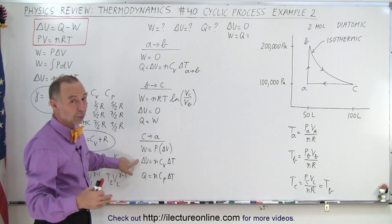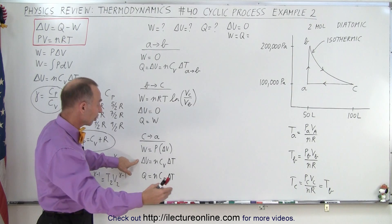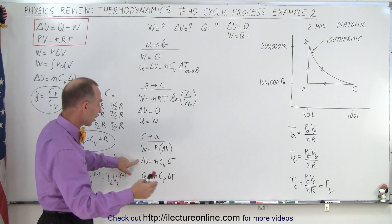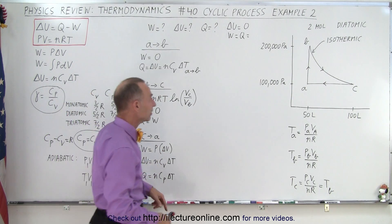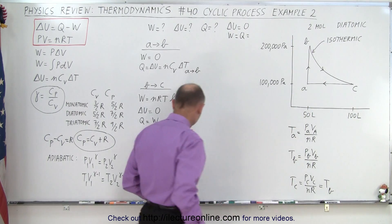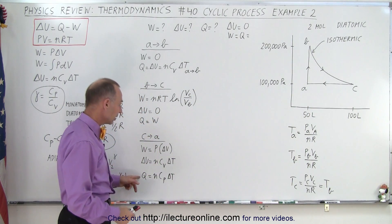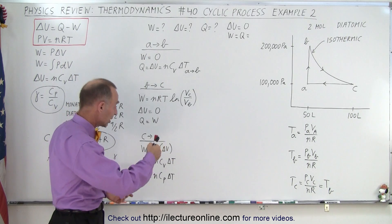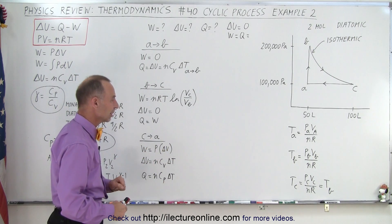For the internal energy, we will also get a negative result, because the temperature decreases going from right to left. It's nCv delta T. And then finally, for the heat added to the gas, or in this case, the heat removed from the gas, because the temperature decreases, nCp delta T.